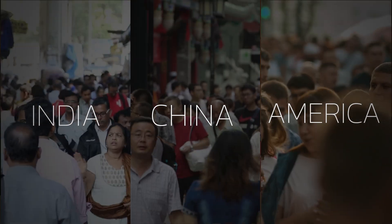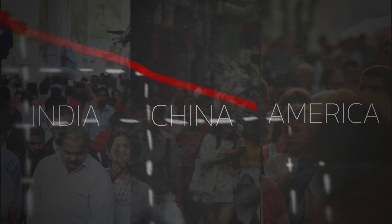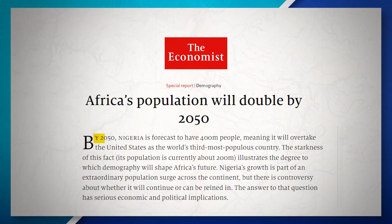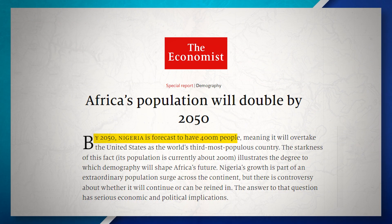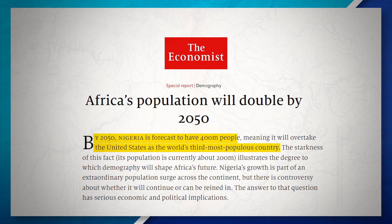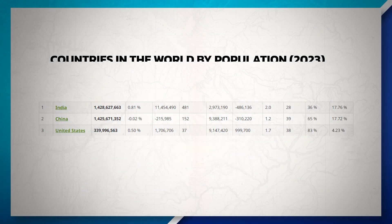All three of these countries have a decreasing growth rate. In fact, it's only a matter of time until these countries might end up being replaced on the list. Countries like Nigeria are expected to have over 400 million people.